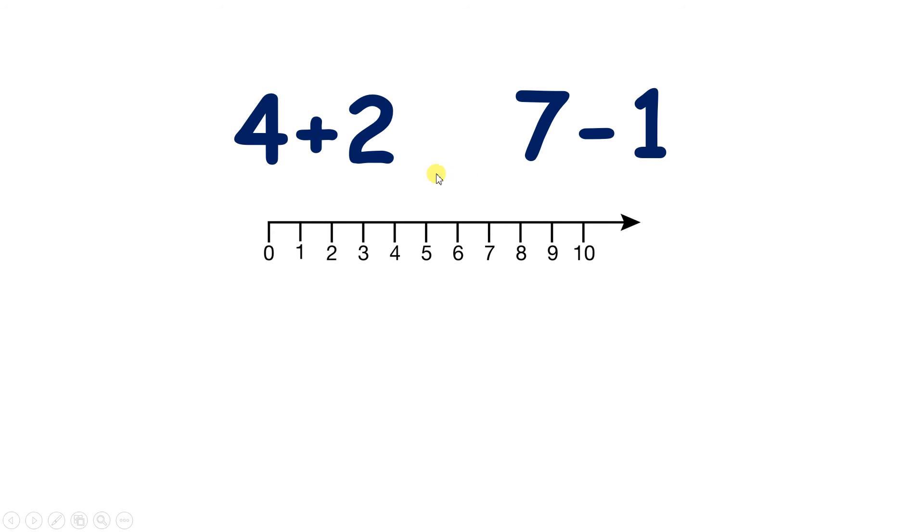Now we have 4 plus 2, and 7 subtract 1. So if I'm on 4, and I go along 1, 2, I get to 6. And if I'm on 7, and I go back 1, I get to 6 as well. So both calculations give us the answer 6.